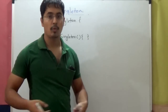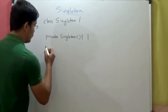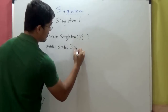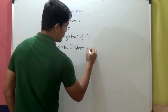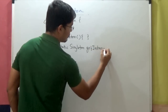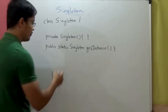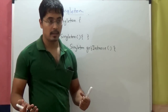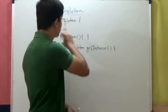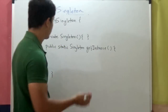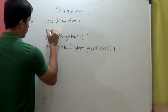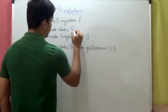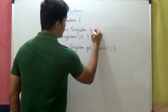But we have to provide a means to access the one instance of the singleton class. So we will write a public static method which will return an instance of the same class Singleton, and let's name this method as getInstance. In this method, we will create an instance of this singleton class and return it. But before that, we have to make sure there exists only one instance, so we will have a private static field of type Singleton, and we will name it uniqueInstance.